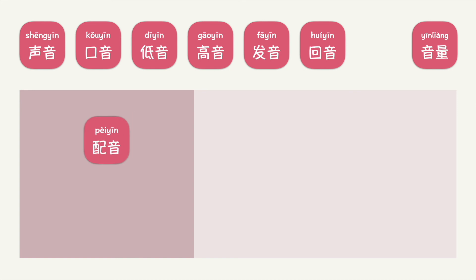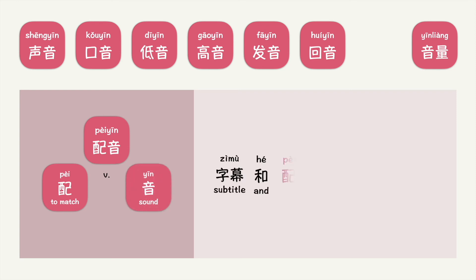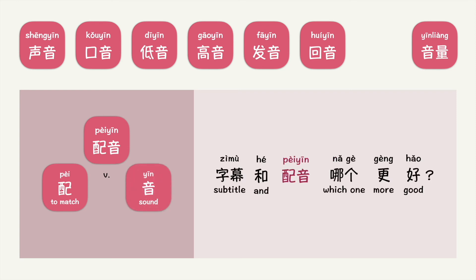配音. 配音 is a verb. 配 means to match, 音 means sound. Put into context, you can say: 字幕和配音哪个更好？ To match sound — what do you think 配音 means? 配音 means to dub or do a voiceover.